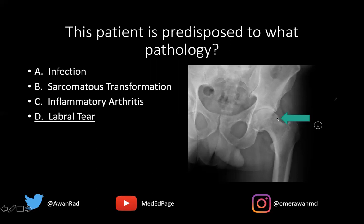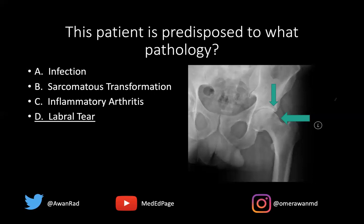This is known as CAM-type femoral acetabular impingement. Notice also that even though this patient is very young, in their 20s, they have this lack of offset at the femoral head and neck junction. They've already developed subchondral cystic change along the superior lateral acetabulum, which would be very abnormal for someone 25 years old. There is already a moderate amount of joint space loss along the superior lateral acetabulum.